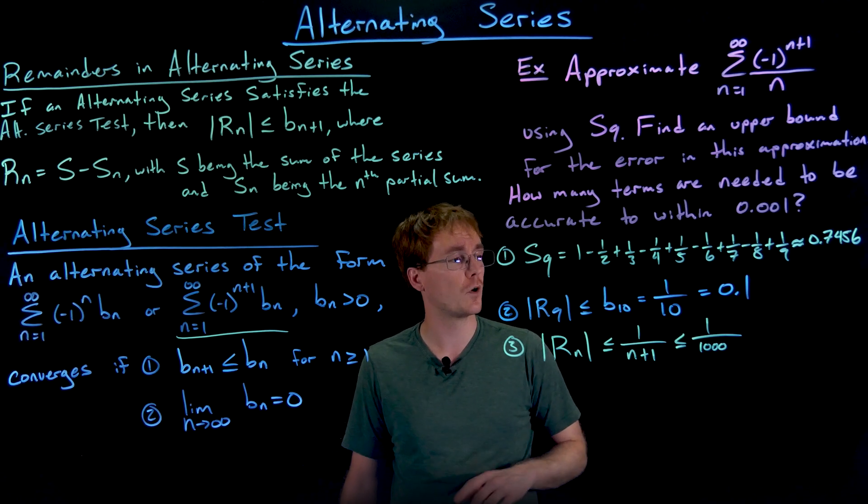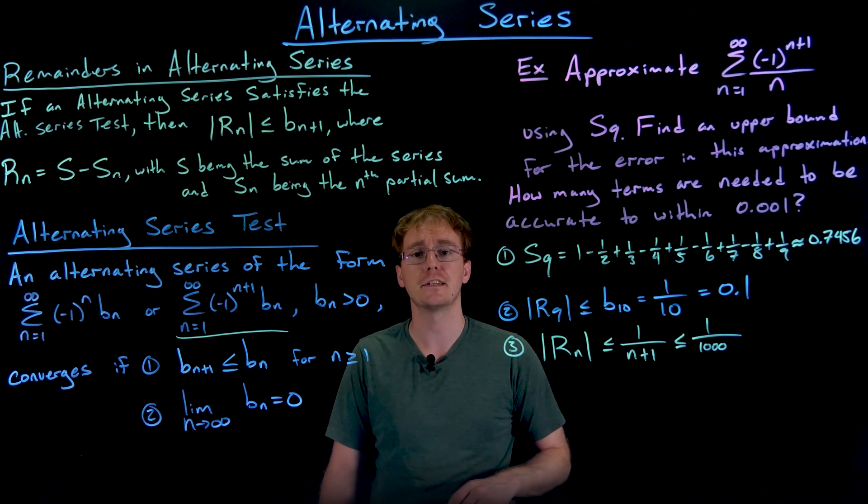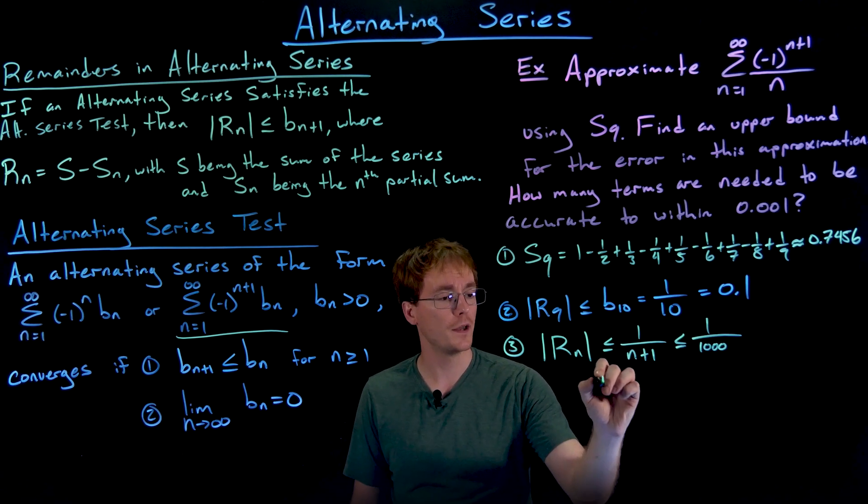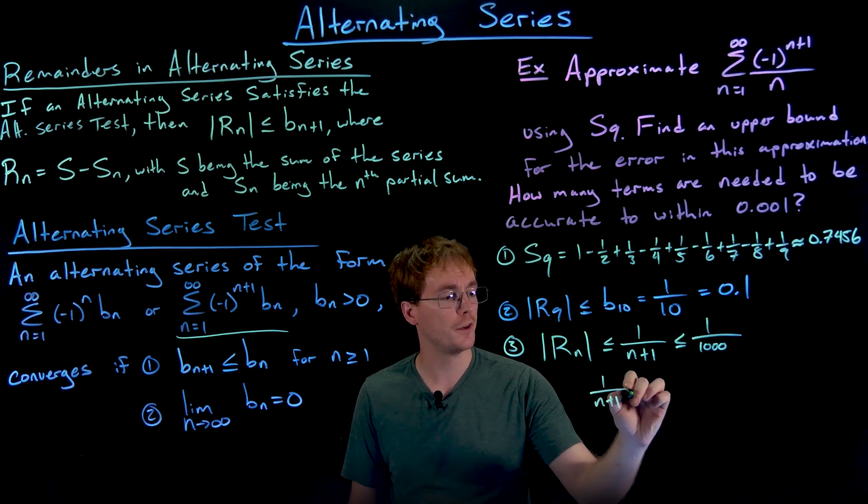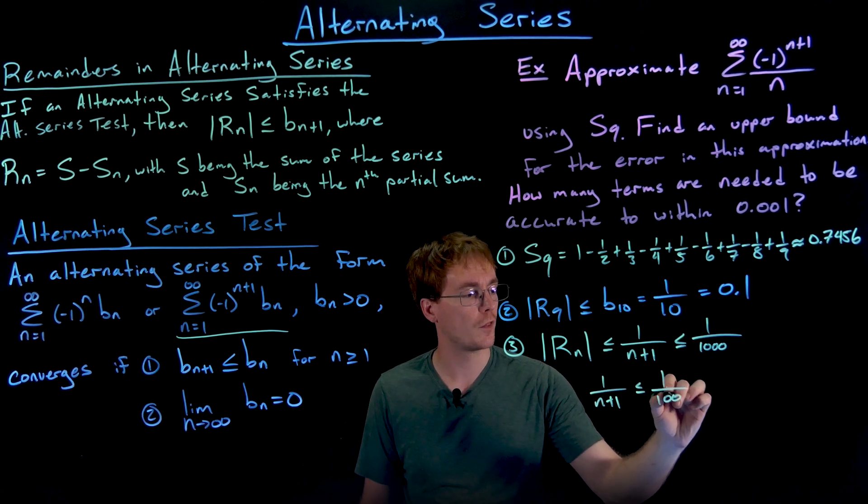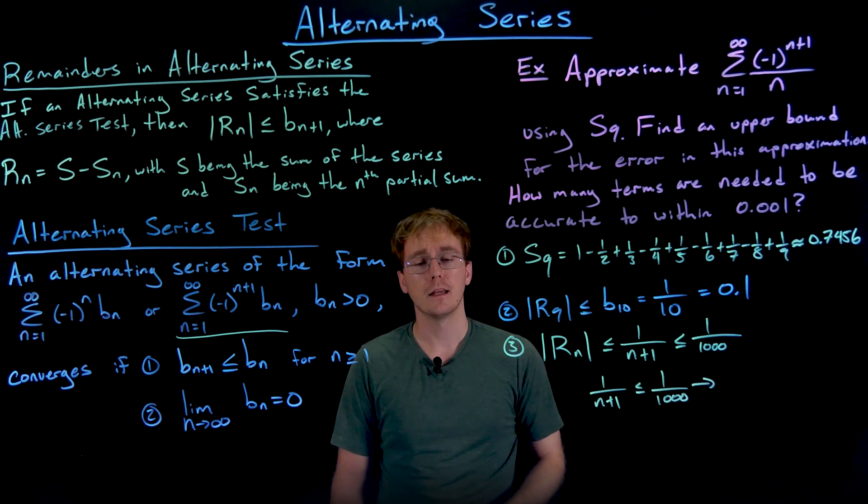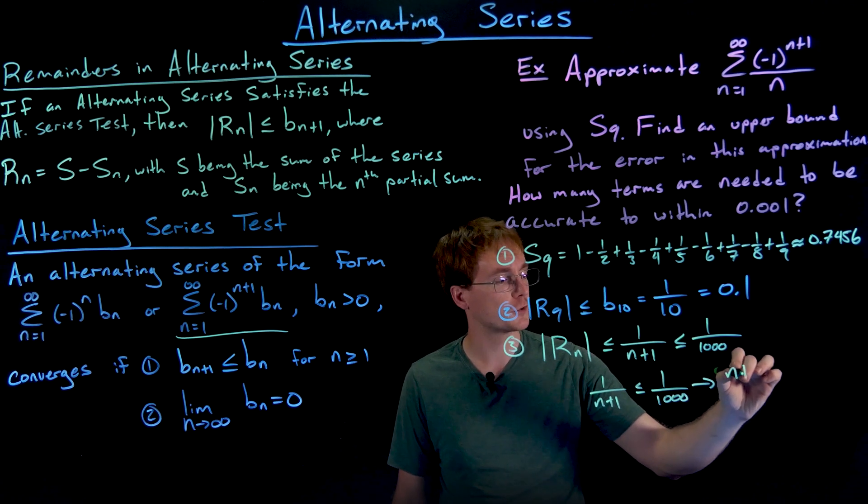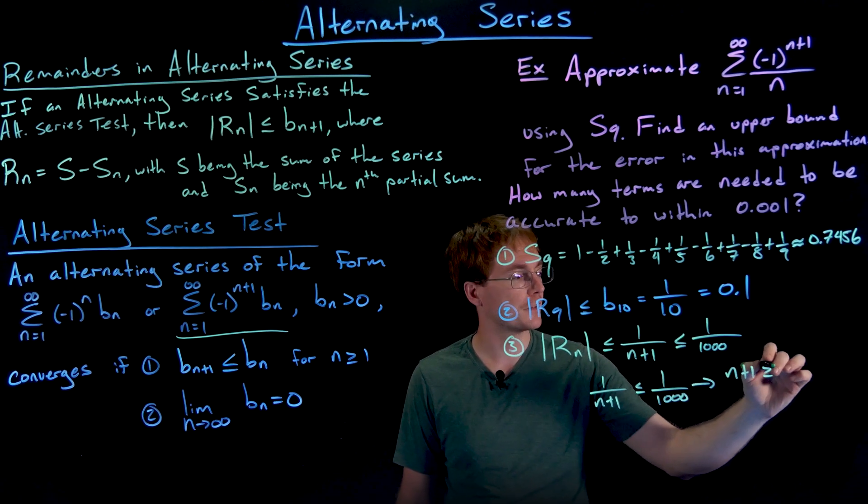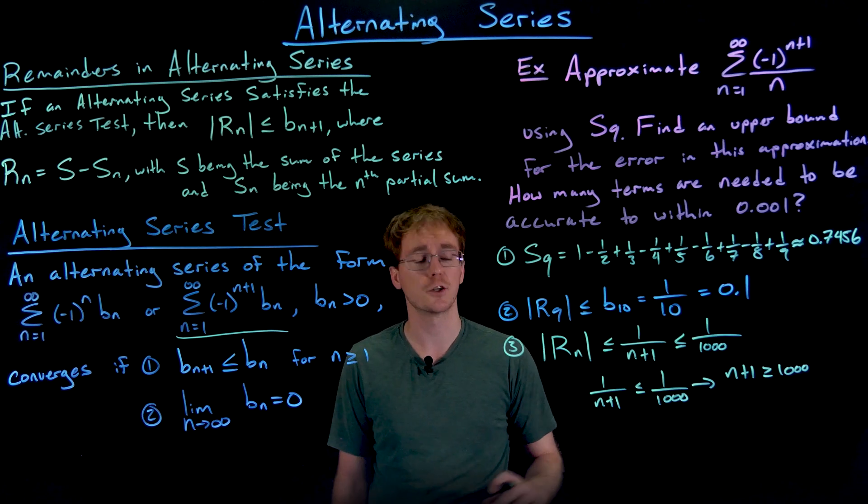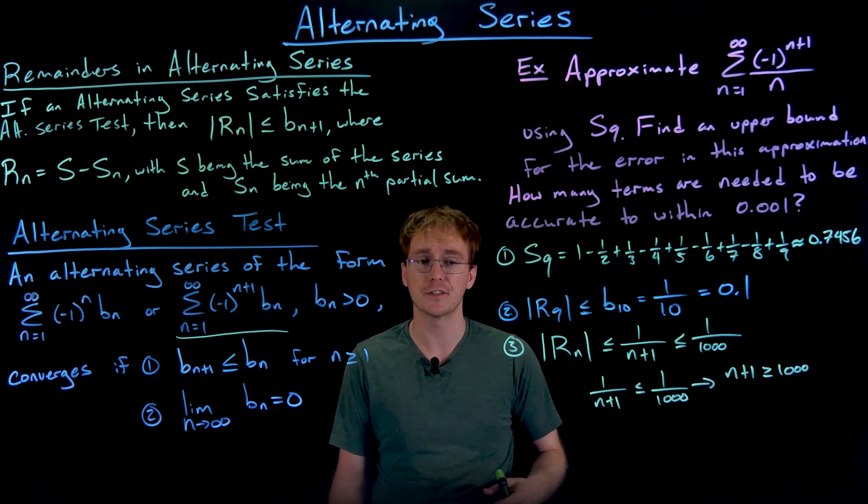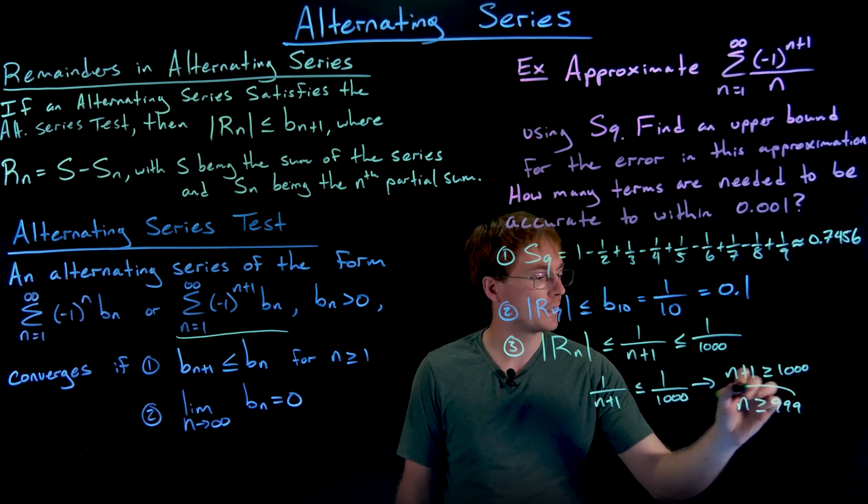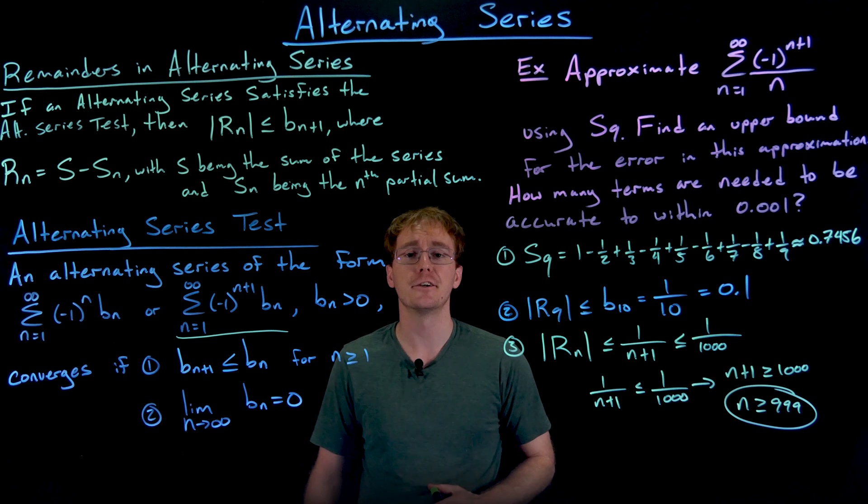As long as we make that less than or equal to one one thousandth, we'll guarantee that our error is within one one thousandth. So now we just have to solve this inequality. When is one over n plus one less than or equal to one over one thousand? We can do some cross multiplication, just some basic algebra with this inequality to first see that n plus one will have to be greater than or equal to one thousand in order for this to occur. And then if we subtract one from each side, we see that n must be greater than or equal to nine hundred and ninety-nine.